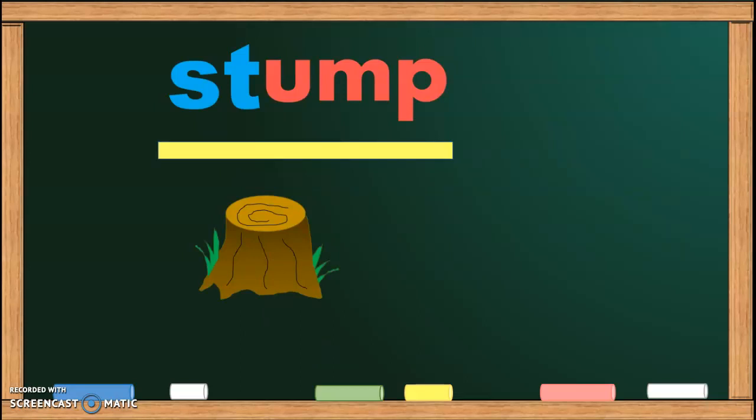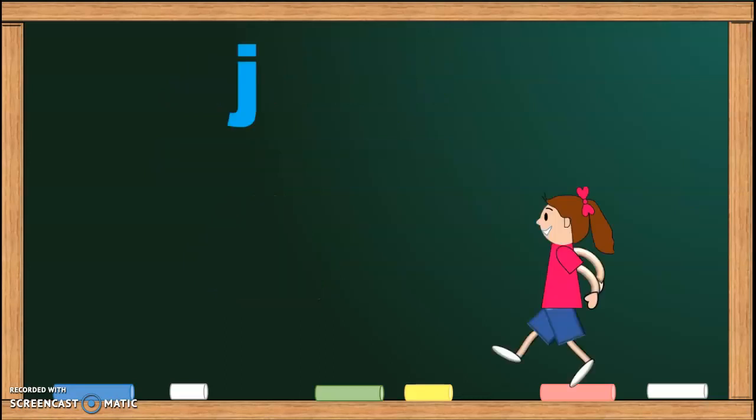The stump is the part of the tree that is left after the tree is cut down. J, UMP, JUMP.